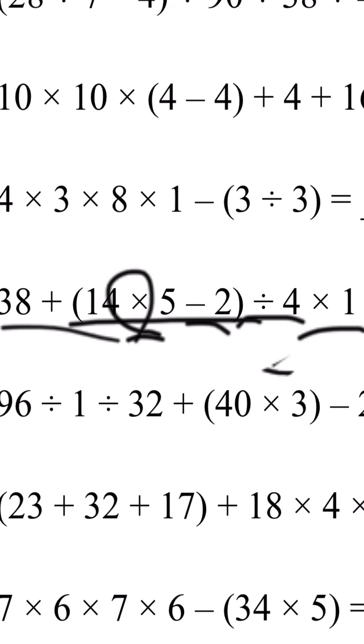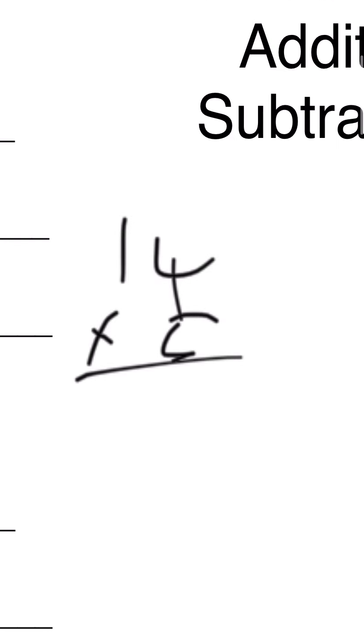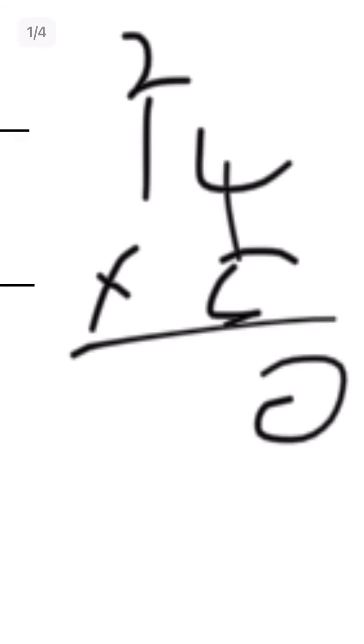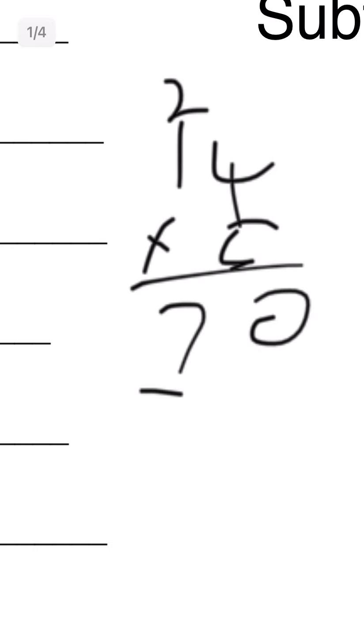So 14 multiplied by 5: 4 times 5 is 20, 5 times 1 is 50, and 50 plus 20 is 70. And you need to subtract 2. 70 minus 2 is 68.